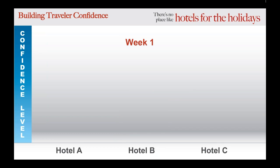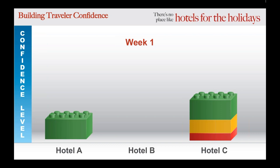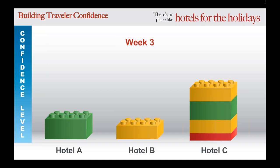During week one of this winter season, Hotel A receives one positive online review; Hotel B receives no feedback and hasn't gotten any online reviews for several months; while Hotel C receives three mixed reviews — one positive, one neutral, and one negative. Fast-forwarding to week three, Hotel A still hasn't received any new feedback since week one, Hotel B generates one neutral review, and so does Hotel C.